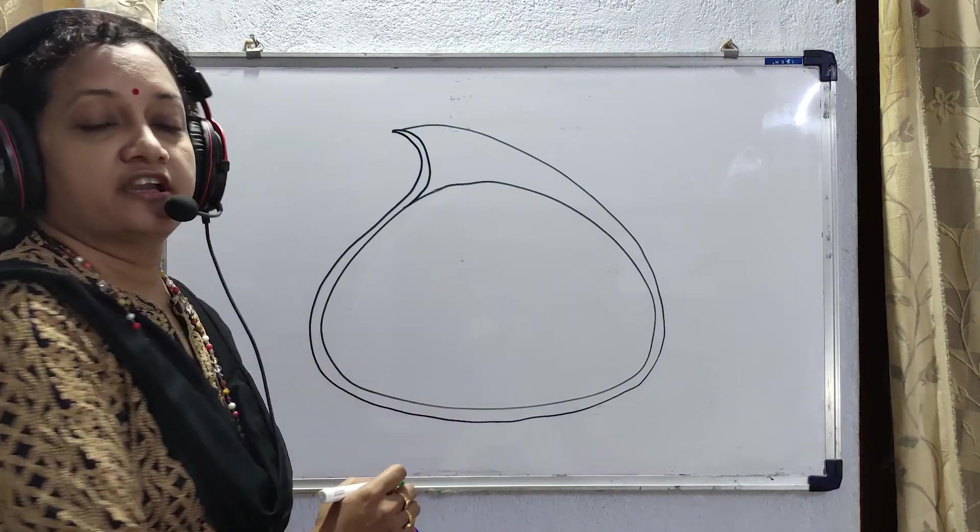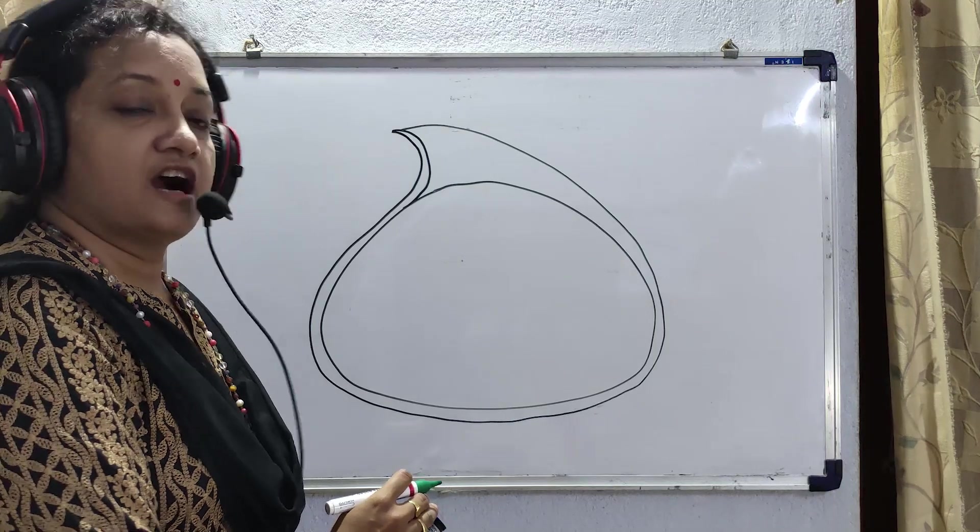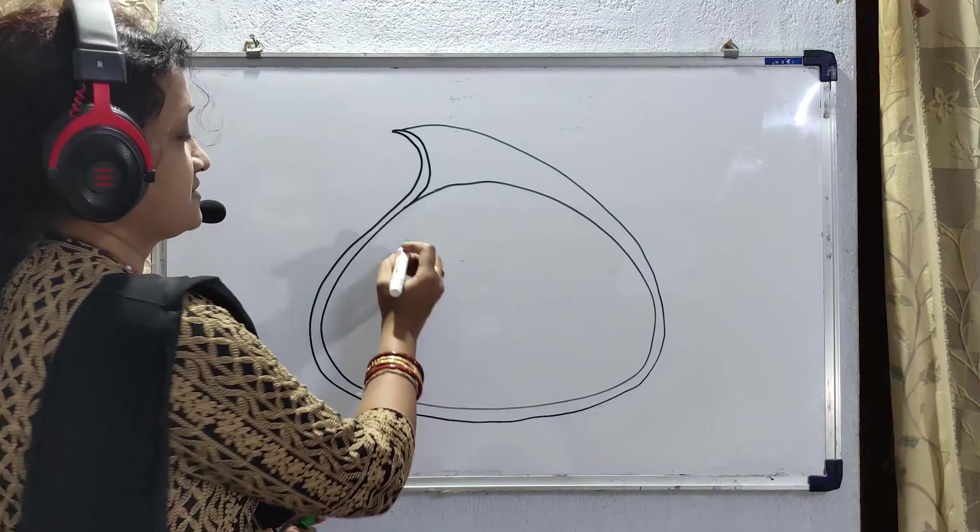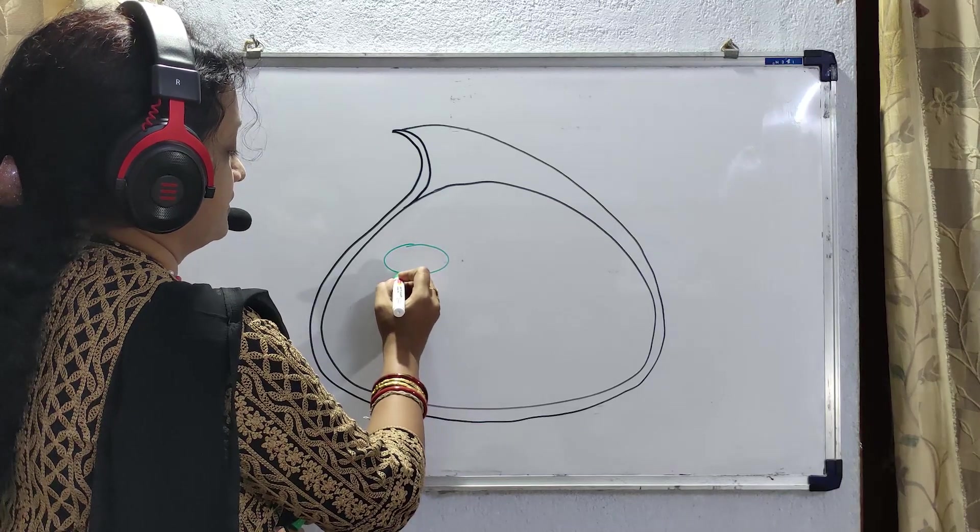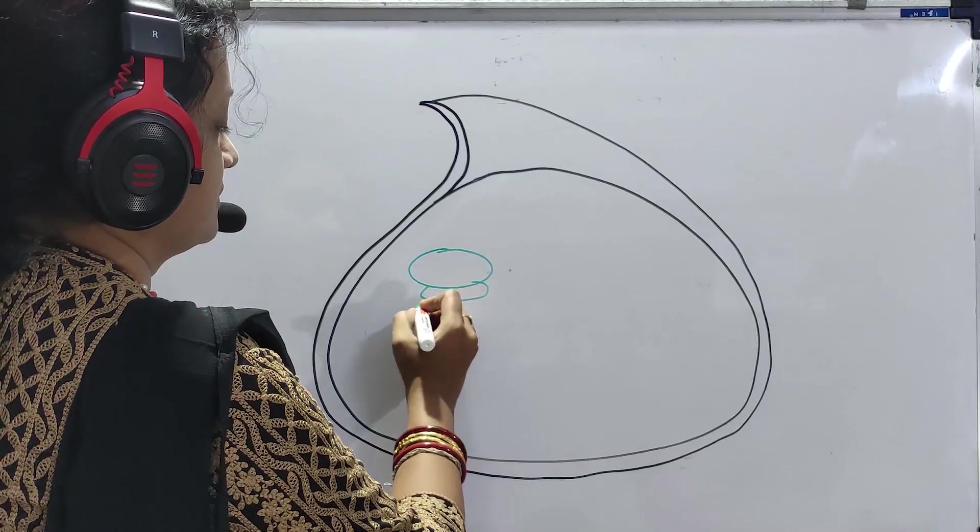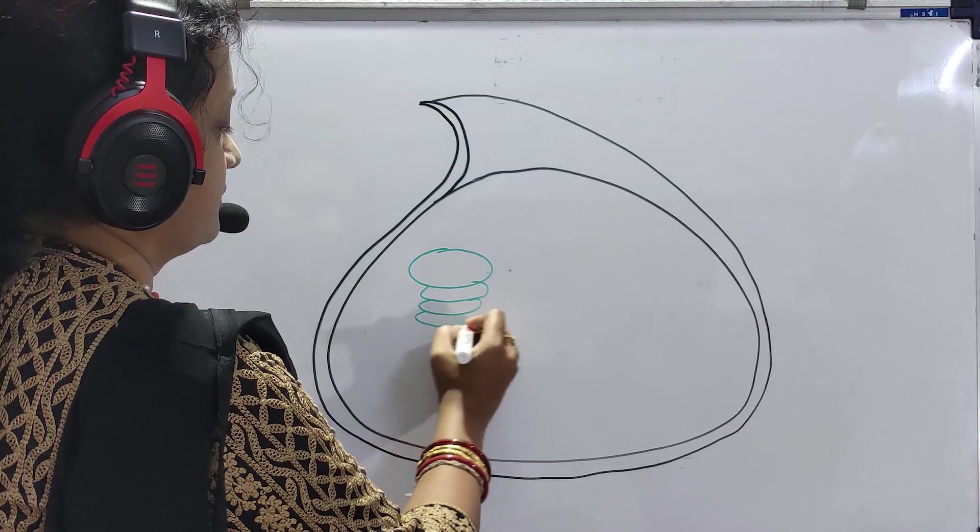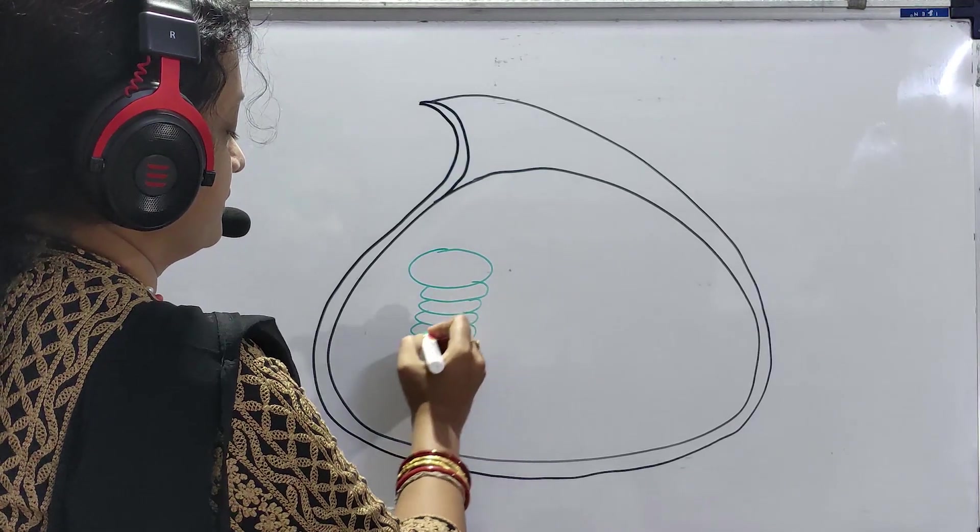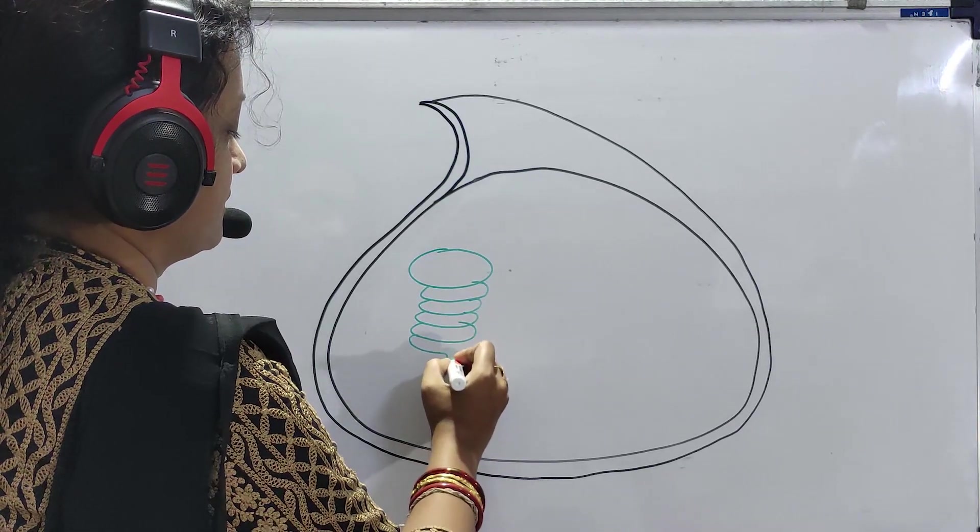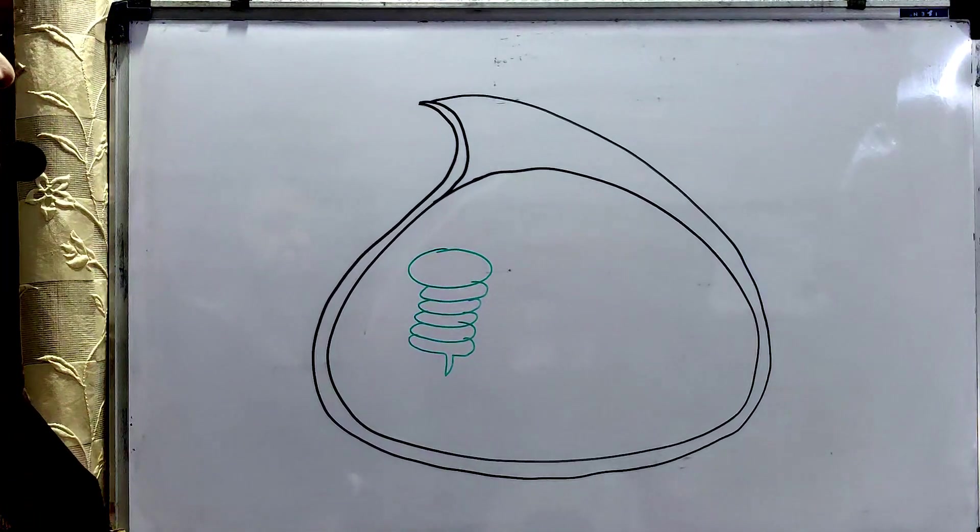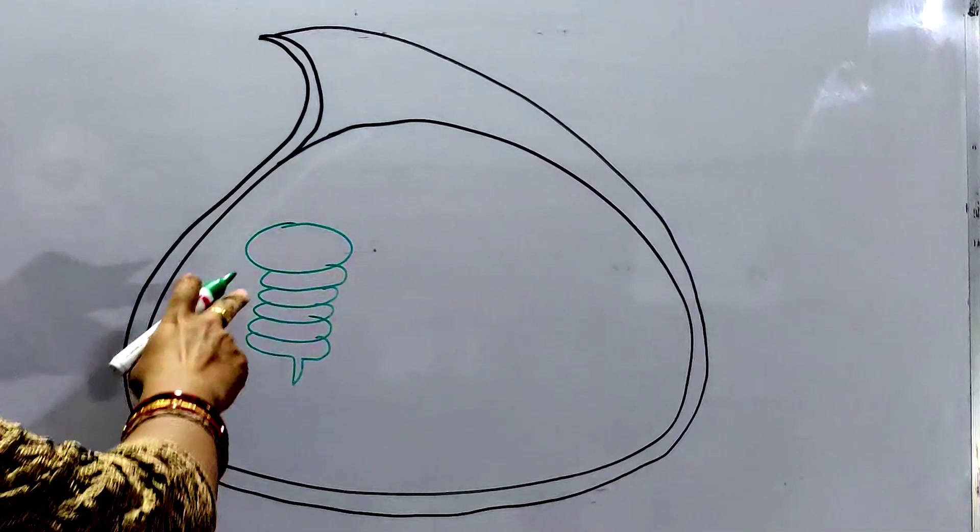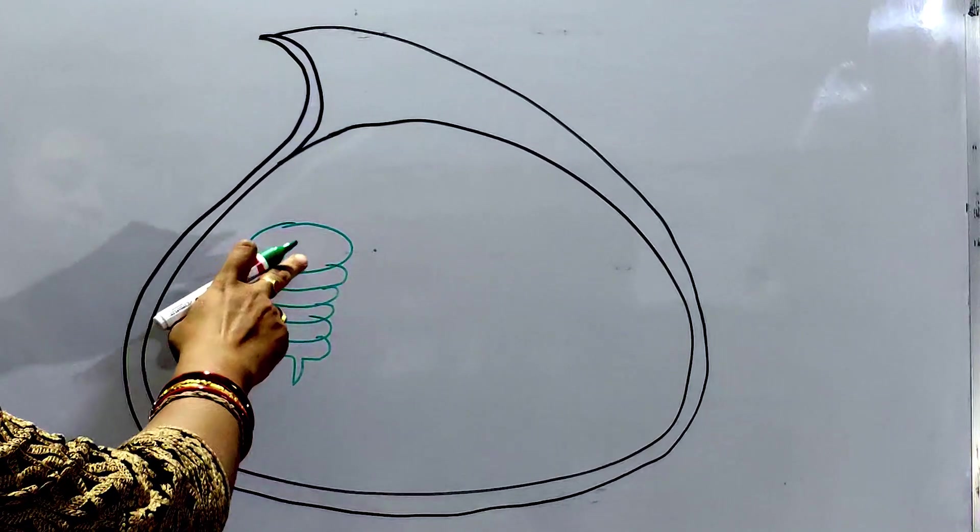Granum is composed of a number of thylakoids. How to draw the diagram of the thylakoids? I have drawn the diagram of one granum. Count how many number of thylakoids are here - one, two, three, four, five, six.